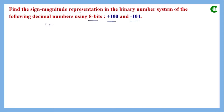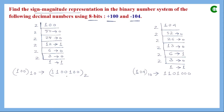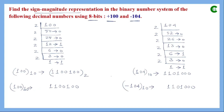We first convert plus 100 and plus 104 into their equivalent binary values. The binary equivalent of 100 has 7 bits, and the binary equivalent of 104 also has 7 bits. Since we need 8 bits with sign-magnitude representation, the MSB (most significant bit) represents the sign. For the positive number plus 100, the MSB is 0, giving us the complete 8-bit sign-magnitude representation.